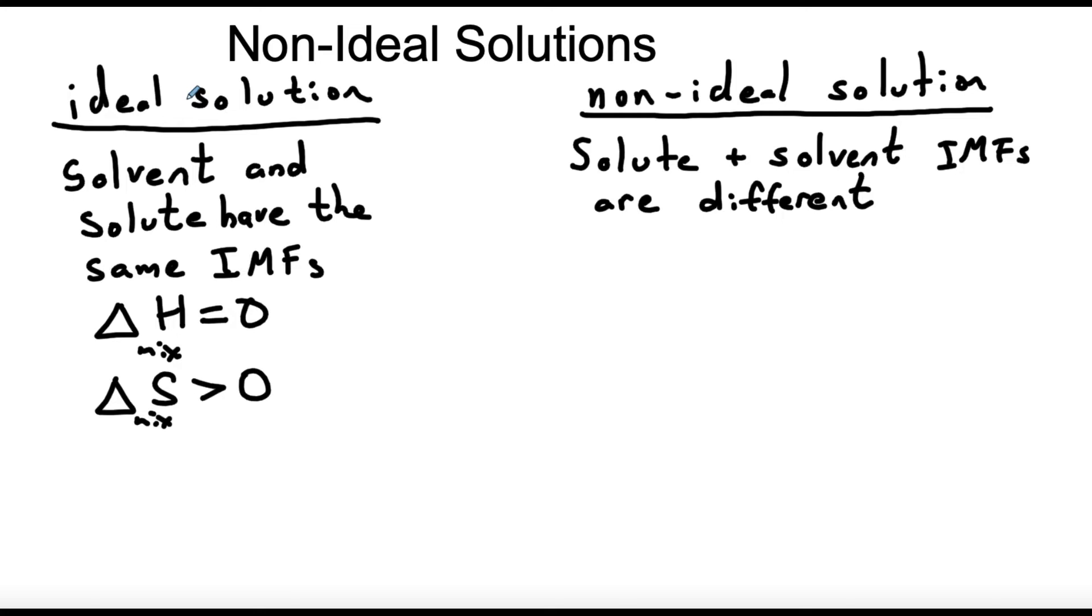In other words, if I average the strength of the solute-solute interactions with the strength of interactions in the solvent and look at solvent-solvent IMFs, how does that compare with the mixture? How does that compare with the strength of IMFs between a solute molecule and a solvent molecule? When I make the mixture does the average strength of IMFs go up or down? If it goes up or down, in other words if it doesn't stay the same, then we don't have an ideal solution.